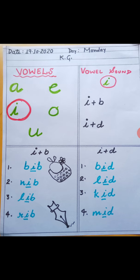You see B, I, B, Bib. What we have used I and B. In this column, in first column we have used I and B. So B, I, B, Bib.